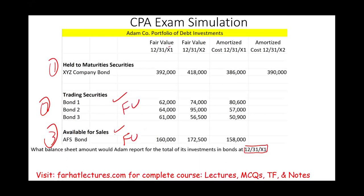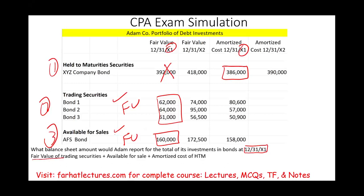We're looking at X1, so the fair value of X1 applies to bond 1, bond 2, bond 3, and the available-for-sale bond — those are reported at fair value. For held-to-maturity, we report the value at amortized cost. We don't use fair value for held-to-maturity; we report them at amortized cost specifically for year X1. So what's reported on the balance sheet is the fair value of trading securities plus the fair value of available-for-sale, plus the amortized cost of held-to-maturity.